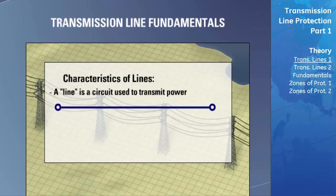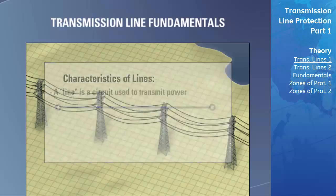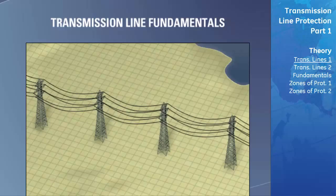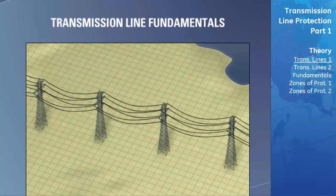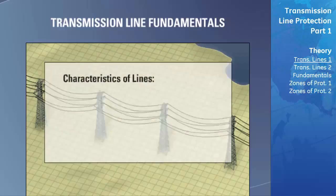The two techniques of line protection we will address are distance relaying and line current differential. We will first look at distance relaying. Transmission lines that are protected using distance relays are usually at least one kilometer in length and can reach distances of 750 kilometers or more.